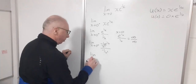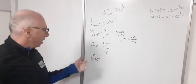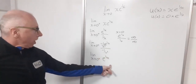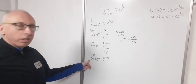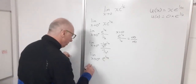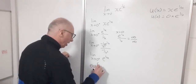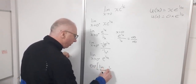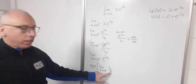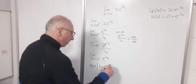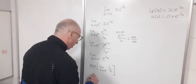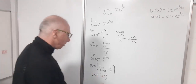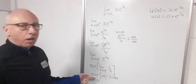So the limit as x approaches 0 from the positive side simplifies to e^(1/x). Taking the exponential outside the limit, I can write this as exp of the limit as x approaches 0 from the positive side of 1/x. That's a standard limit giving positive infinity, so e to the infinity is just infinity. That's our result from the positive side.